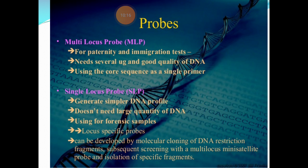Multi-locus probes (MLP) are normally used for paternity and immigration tests — one of the major applications of DNA fingerprinting. MLPs require several micrograms of good quality DNA and use the core sequence as a single primer. Single locus probes generate a simpler DNA profile, do not need large quantities of DNA, are normally used for forensic samples, and are locus-specific probes.